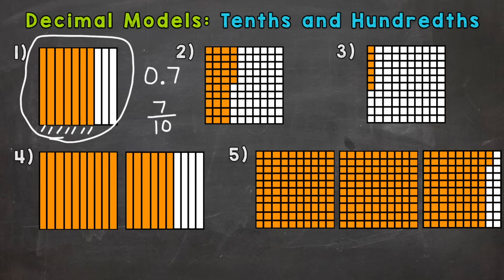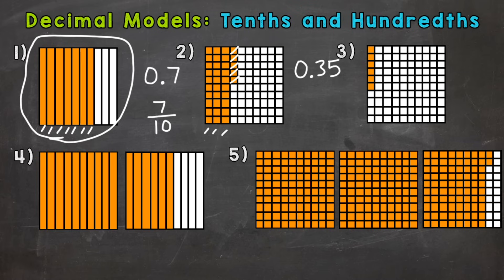Let's move on to number two, where again that full square represents one whole, but we don't have the whole square filled in, so we need to represent something less than a whole with either a decimal or a fraction. Number two has 100 equal pieces within that full square, so we're going to be working with hundredths. Each one of those pieces is worth one hundredth. We'll start by counting the columns — each column has ten hundredths: ten, twenty, thirty, and then count the individuals: thirty-one, thirty-two, thirty-three, thirty-four, thirty-five hundredths. We would write it as zero wholes, decimal, thirty-five hundredths. Or in fractional form, thirty-five over one hundred — thirty-five hundredths.